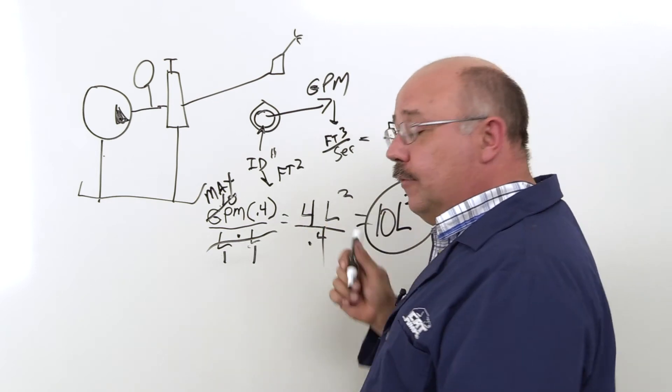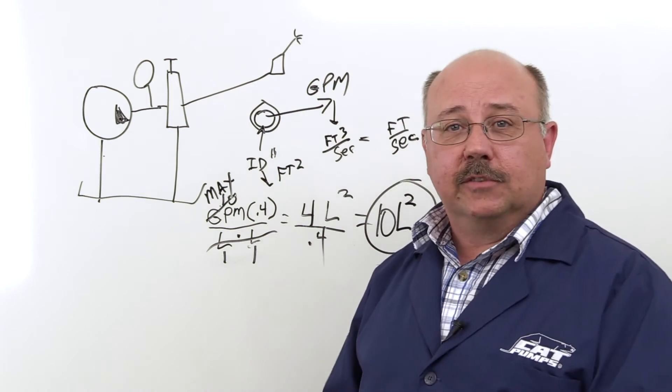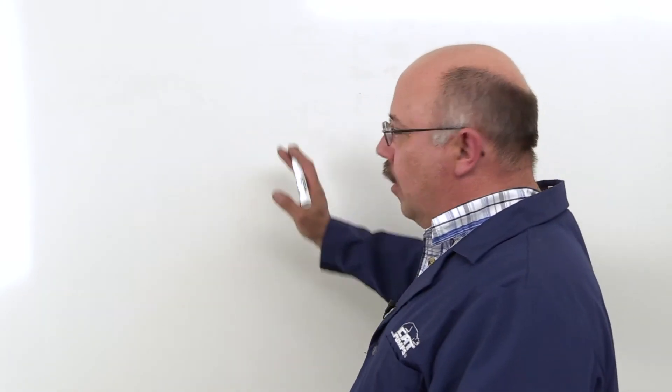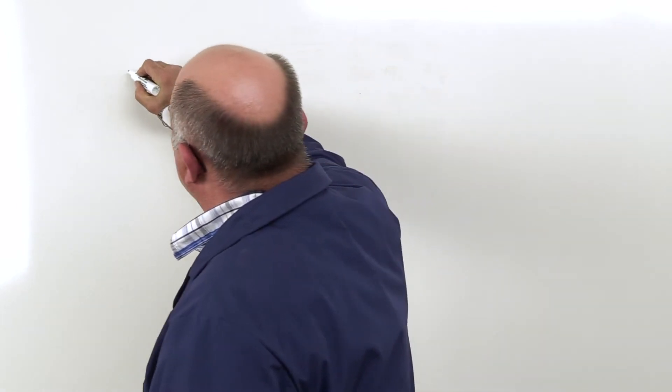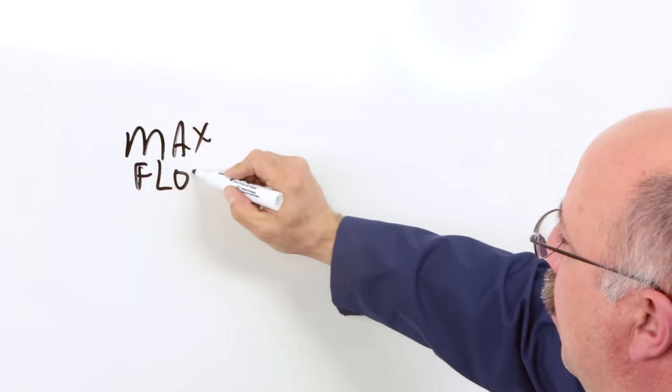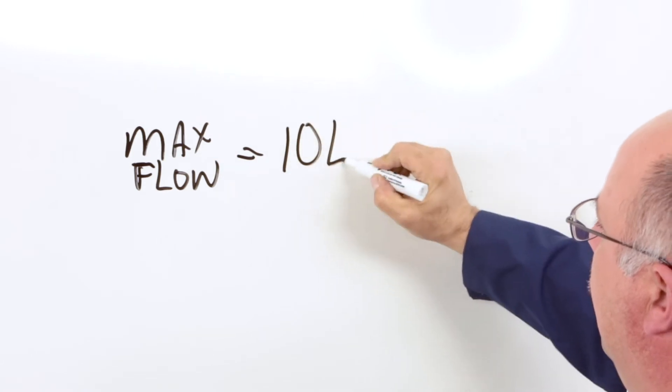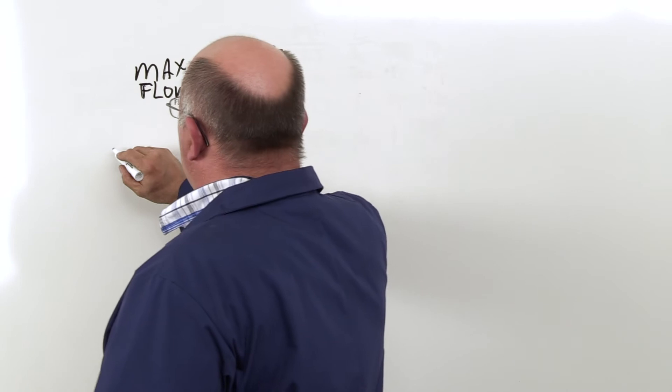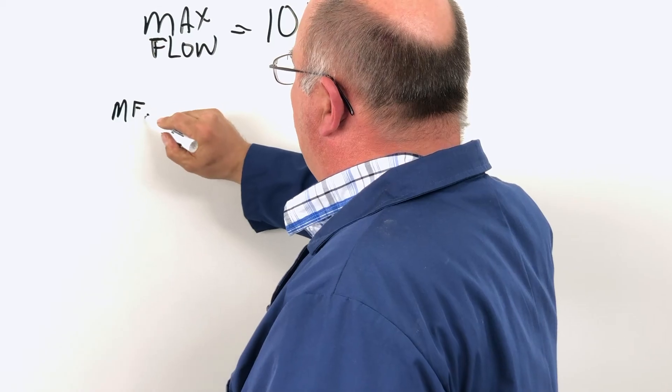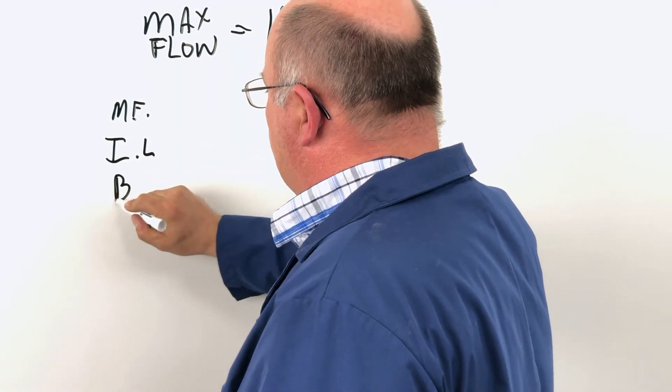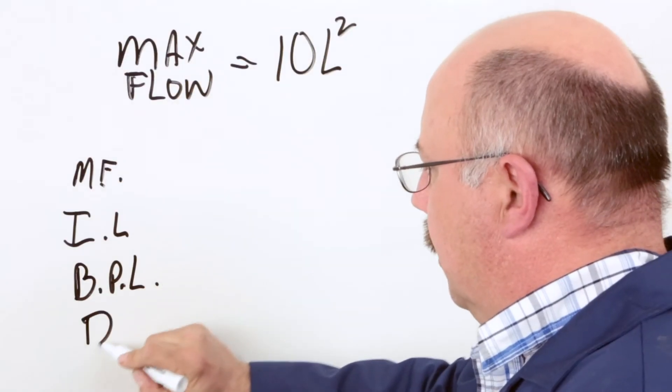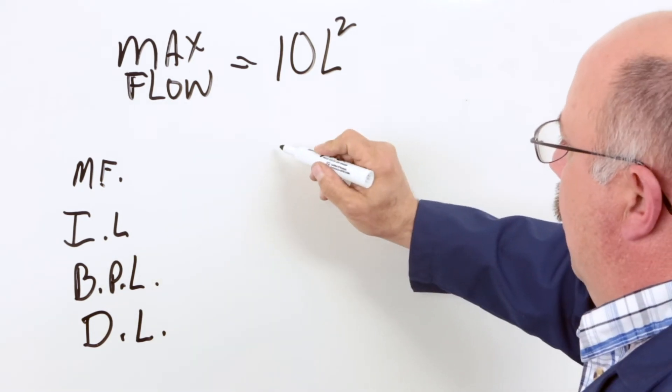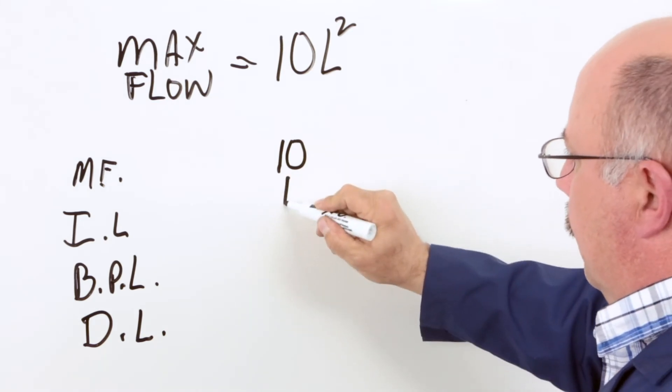So now we're going to take this formula that we've derived and we're going to make a chart on line size versus max flow in the system. Welcome back. We've cleared the board so that we can use our formula we just derived and make a chart to show what line sizes we should use after we've calculated the max flow for each line size. So again, that formula was max flow equals 10L-squared. Where the flow is in GPM and the L is in the diameter of the line in inches. So let's throw that back out and let's start a chart here. We'll do max flow. We're going to do inlet line. And eventually we'll do the bypass line. And we're going to do the discharge line.